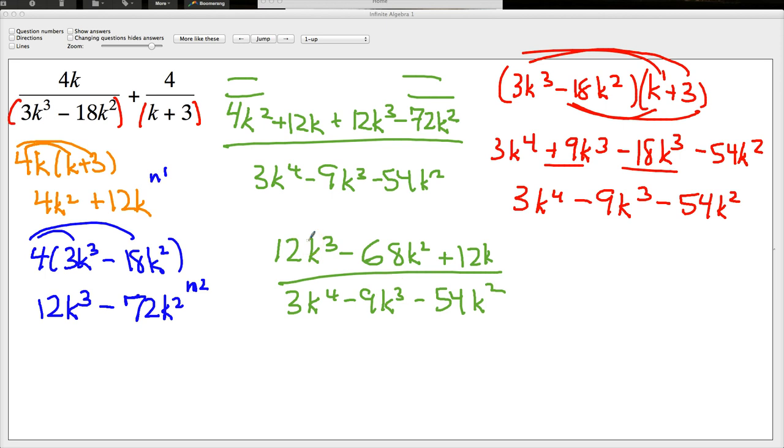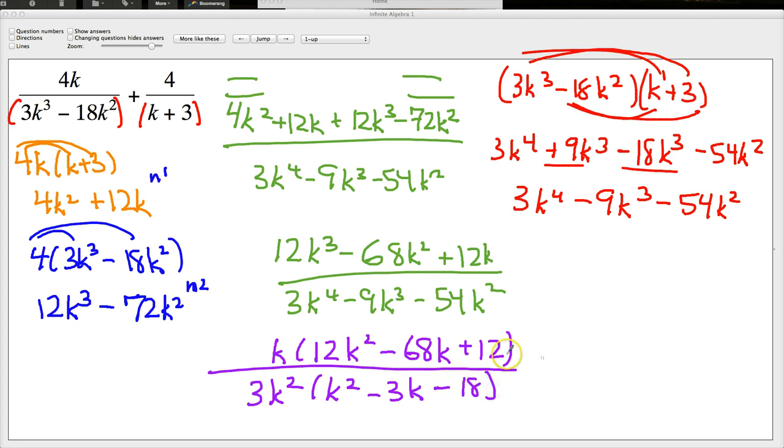So from here, where do you go? Well, you have to look for common factors in the top and the bottom. Like I said, this is a long problem. K comes in all of these sections here. Technically, 2 pops out of it too, but you're welcome to pull that out if you think it's going to be necessary. But for me, it doesn't make a whole lot of sense because 4 is not going to come out of here. So I'm just going to look to see if the thing that makes the most sense is probably take the k out. So it becomes 12k squared minus 68k plus 12. On the other side of things, these all have at least k squared in them. So it's 3k squared. This becomes k squared minus 3k and minus 18.